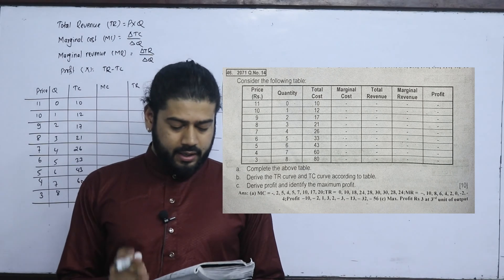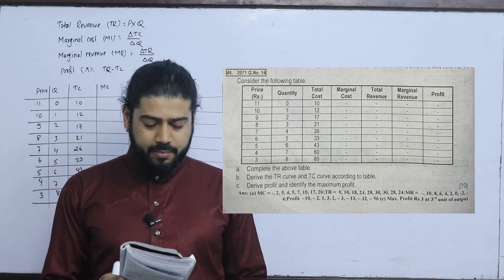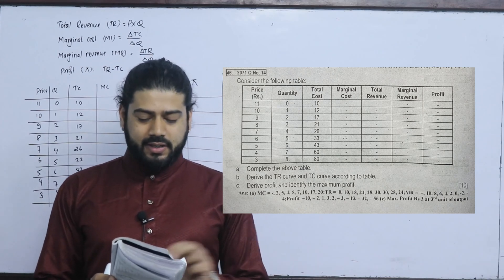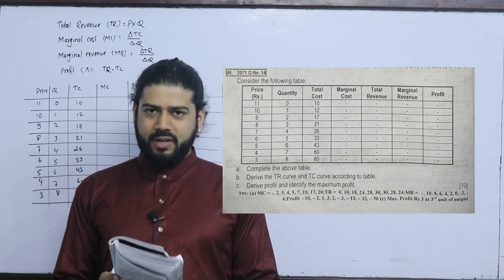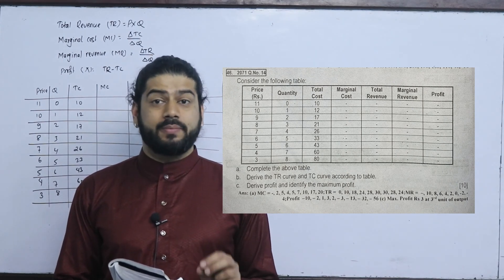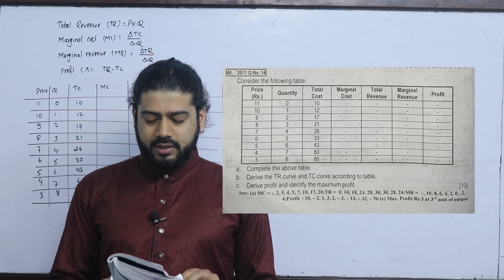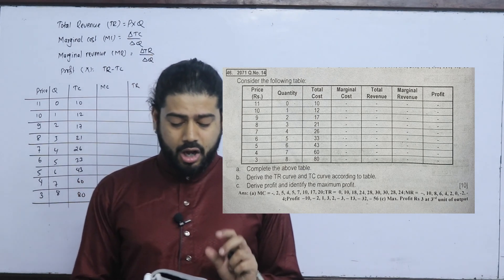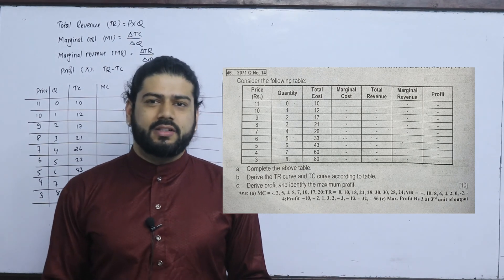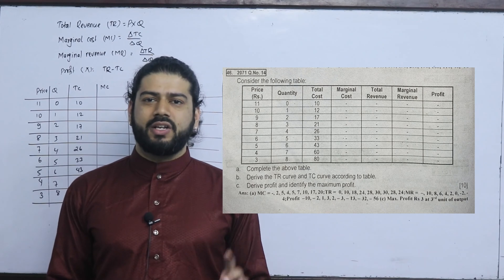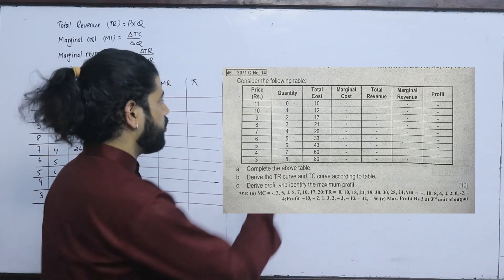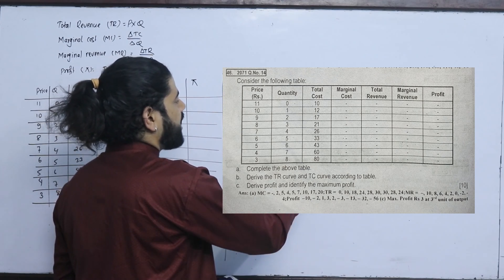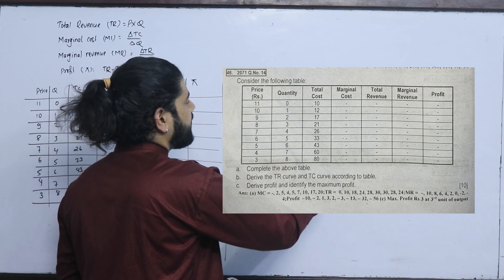The next question: consider the following table. Price is 11, 10, 9, 8, 7, 6, 5, 4, 3. Find marginal cost, total revenue, and marginal revenue. Marginal cost is the change in total cost divided by change in quantity. Marginal revenue is the change in total revenue divided by change in quantity.